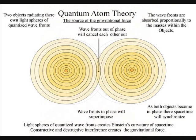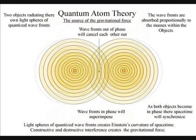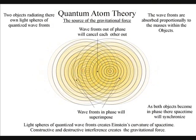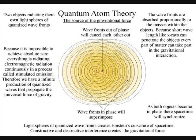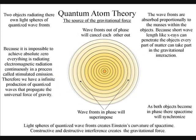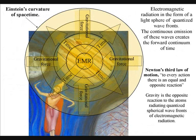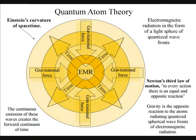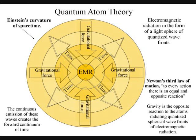It is the outward momentum of electromagnetic radiation that creates the inward force of gravity. The radiating energy will be entirely absorbed proportionally to the masses within the objects. This will cause an unbalanced force, and the two bodies will resonate together. There is no instantaneous action at a distance, and the speed of the gravitational field is the speed of light.